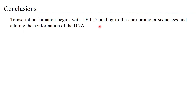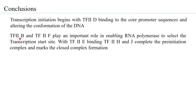Transcription initiation begins with TF2D binding to the core promoter sequences and altering the conformation of the DNA. This conformational change enables the TAFs of TF2D to bind to other cis-acting elements with greater affinity. TF2B and TF2A play an important role in enabling RNA polymerase II to select the transcription start site. With TF2E binding, TF2H and TF2J complete the pre-initiation complex, marking the formation of the closed complex.